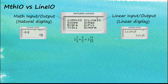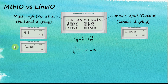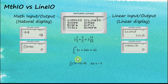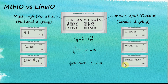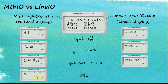For integration, Natural Display shows exactly the same format as expected, while Linear Display shows a line of functions. For differentiation, Natural Display again looks exactly the same, and Linear Display shows a line of functions. For the fourth root of 81, Natural Display matches the standard format, while Linear Display looks a little different. That is the difference between MathIO and LineIO.